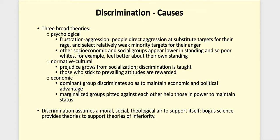Some bogus science theories at times provide a kind of pseudo-proof to support theories of inferiority — eugenics being one of those theories that Adolf Hitler used in the years leading up to World War II to justify the extermination of the Jews. And the Jews were just the beginning of his plan, but that's as far as he got.